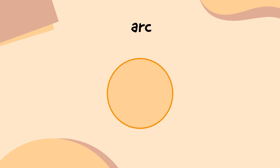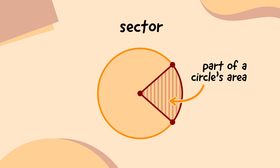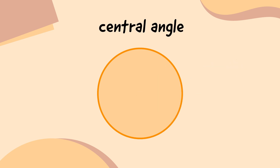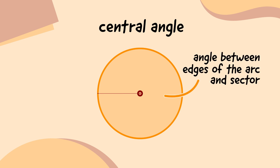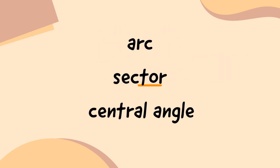An arc is part of a circle's circumference, and a sector is part of a circle's area. But to measure those, we'll also need to measure the central angle, which is the angle in the middle of the circle between the two straight edges of the arc and sector. So we've got an arc, a sector, and a central angle.